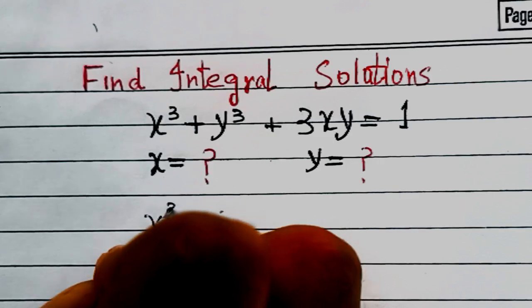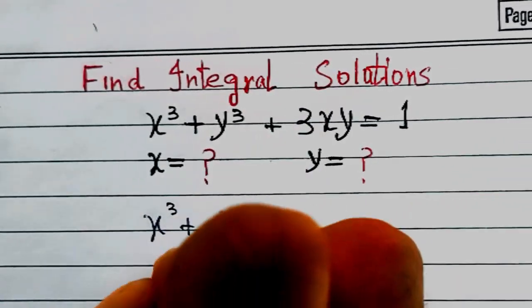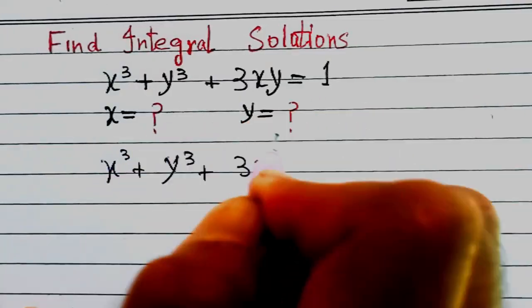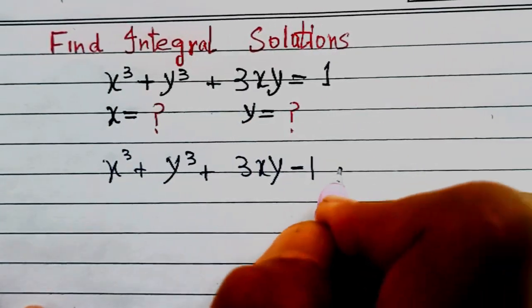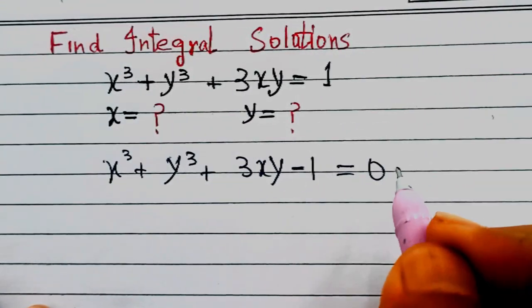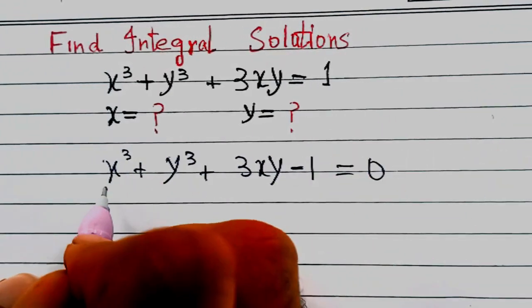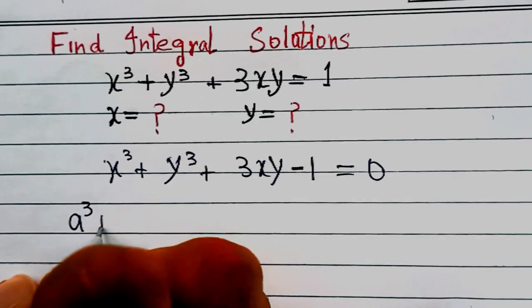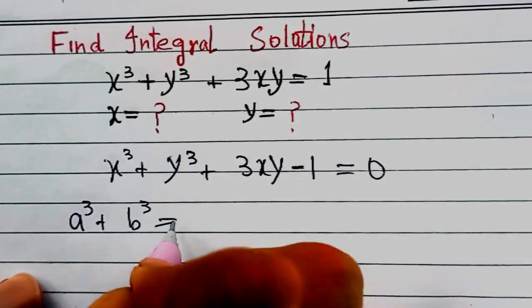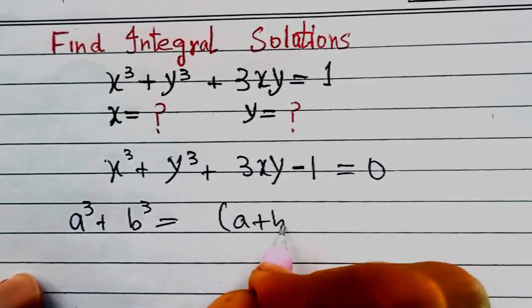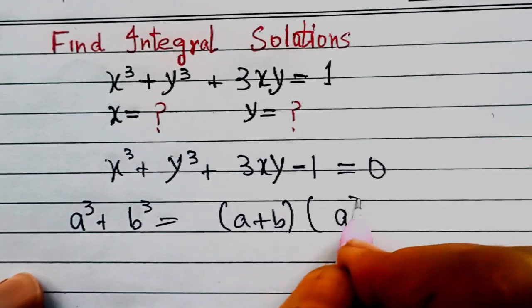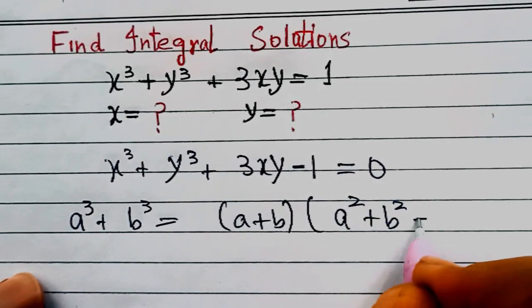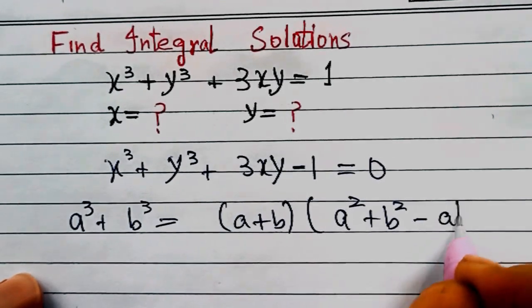We write this as x³ + y³ + 3xy - 1 = 0. We know that a³ + b³ = (a + b)(a² + b² - ab).